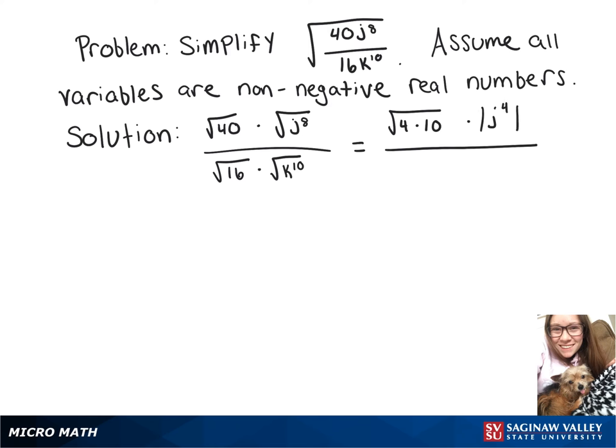All that is over the square root of 16 is 4. Again, we can divide our exponent by 2, so it's 4 times k to the 5th.